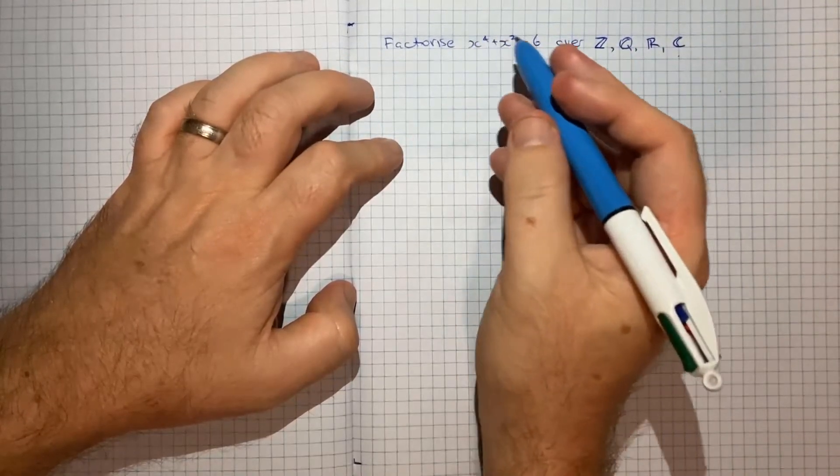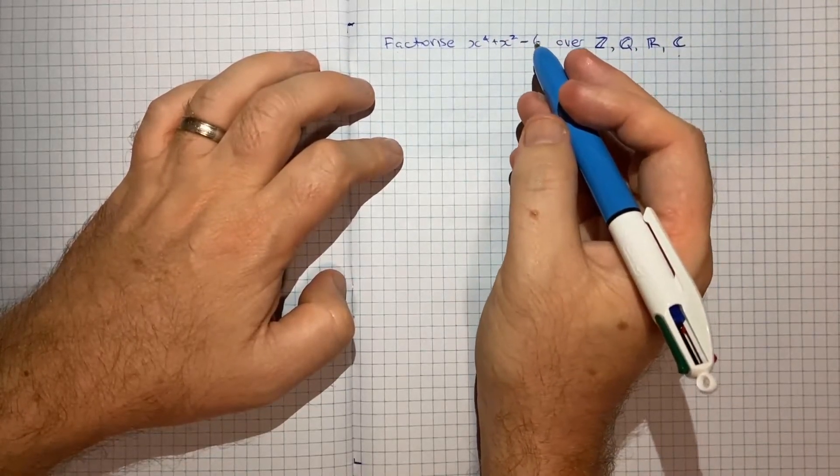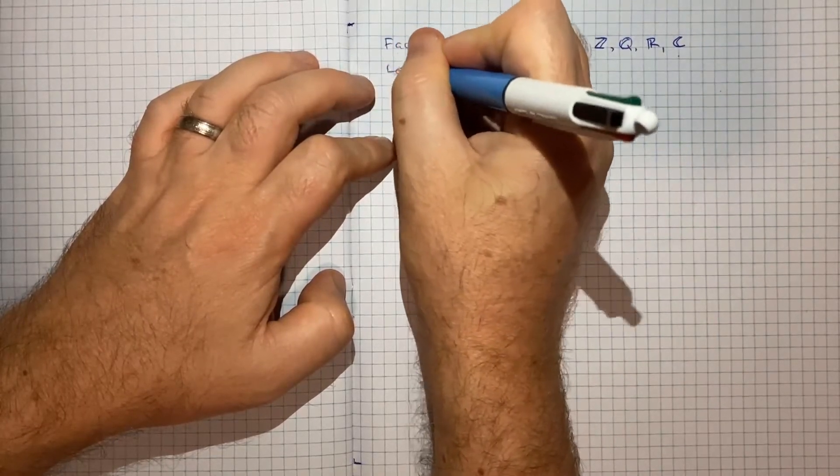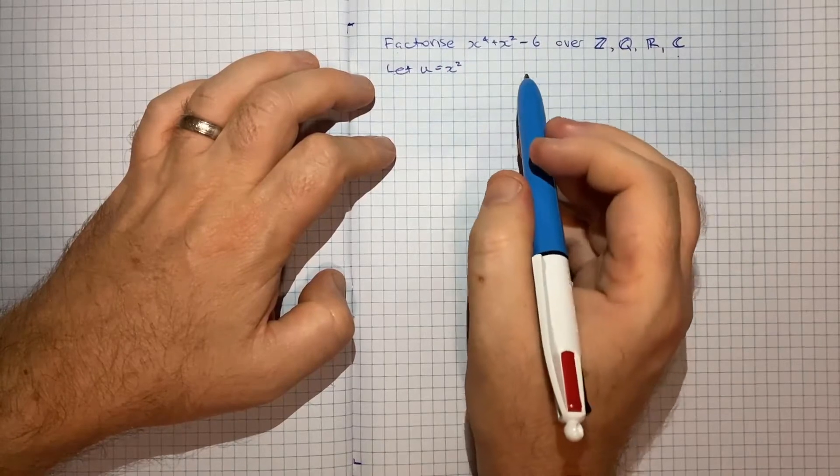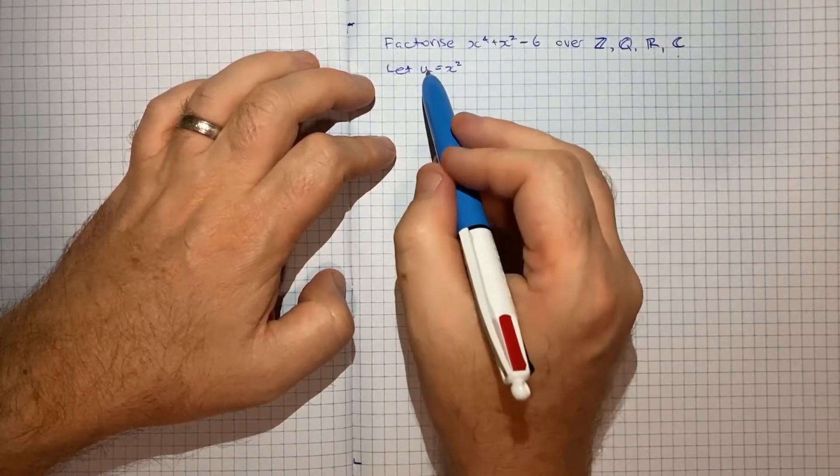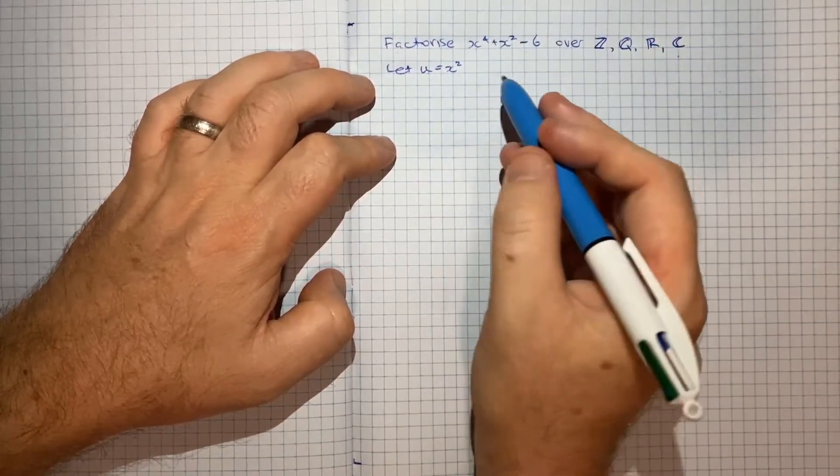I think step one is to let u, some variable u, equal x squared, because that means we're going to be able to substitute in u and end up with a quadratic.